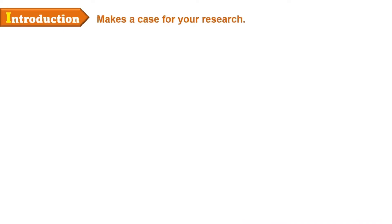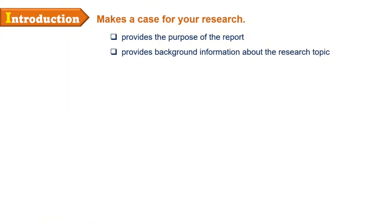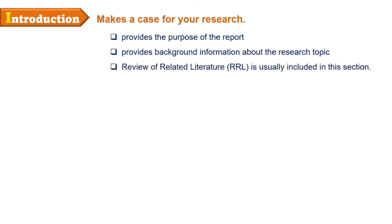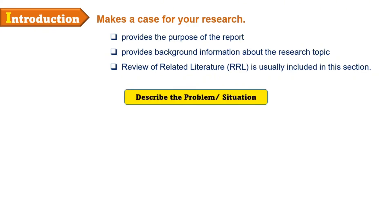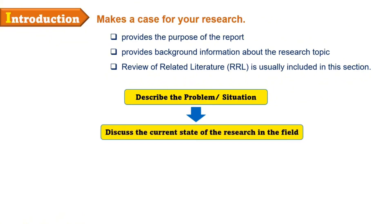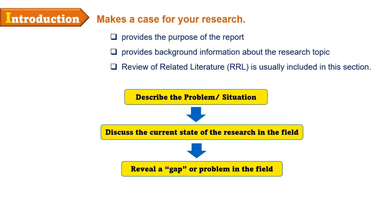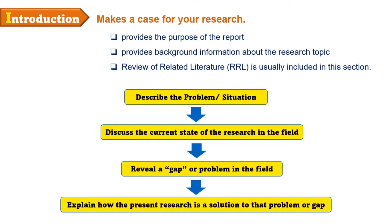Right after the abstract is the introduction. This section makes a case for your report and provides the purpose of the report and background information about the research topic. The Review of Related Literature, or RRL, is usually included in this section, so in the IMRAD format the RRL is not written separately but is included in the introduction. In writing the introduction, begin by describing the problem or situation that motivates the research, move to discussing the current state of research in the field, then reveal a gap or problem in the field, and finally explain how the present research is a solution to that problem or gap. If the study has hypotheses, they are presented at the end of the introduction.